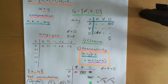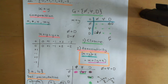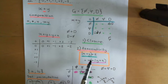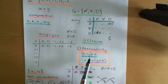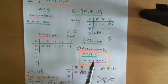The second axiom is the most subtle and most difficult to understand, which is why we've spent so long discussing it. It is associativity. Associativity is about composing three things together — there are two different ways of placing the brackets, and associativity says that the answer you get is exactly the same between these two.